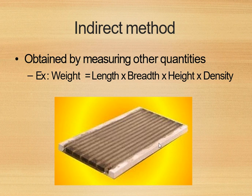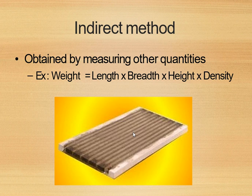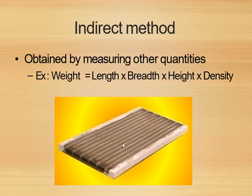For example, suppose you have one block and want to measure its weight. The weight depends on its length, width, height, and the density of the material used. The weight is our goal, but the weight is not measured directly — we have to measure the length, width, and height, then consider the density of the material used in the block, and by multiplying all these quantities we get the weight of the object. That is why this method is called the indirect method.